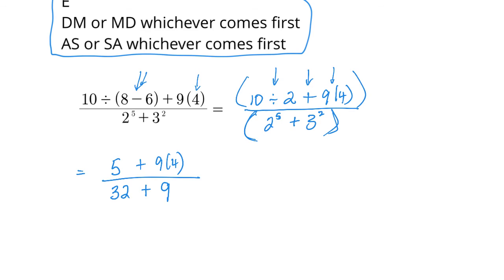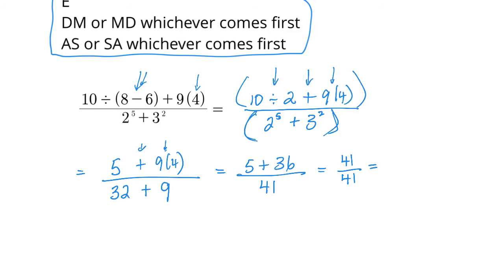Up top I have an add and a multiply — I have to do the multiply first, so five plus nine times four: nine times four is thirty-six, then five plus thirty-six is forty-one. On the bottom, thirty-two plus nine is forty-one. On the top I have forty-one and on the bottom I have forty-one, so when I divide those two I come up with one.